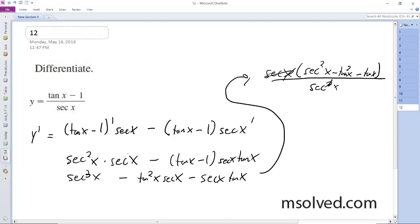This just becomes secant, and we end up with secant squared minus tangent x. We end up with secant squared x minus tangent squared x.